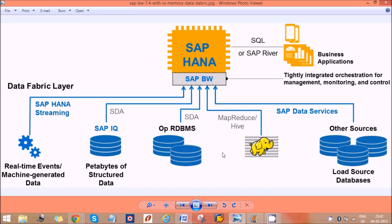Welcome to the session. Today we'll discuss the difference between SAP BW and SAP HANA. SAP BW is a business warehouse where we can create multi-dimensional models to use in reporting.